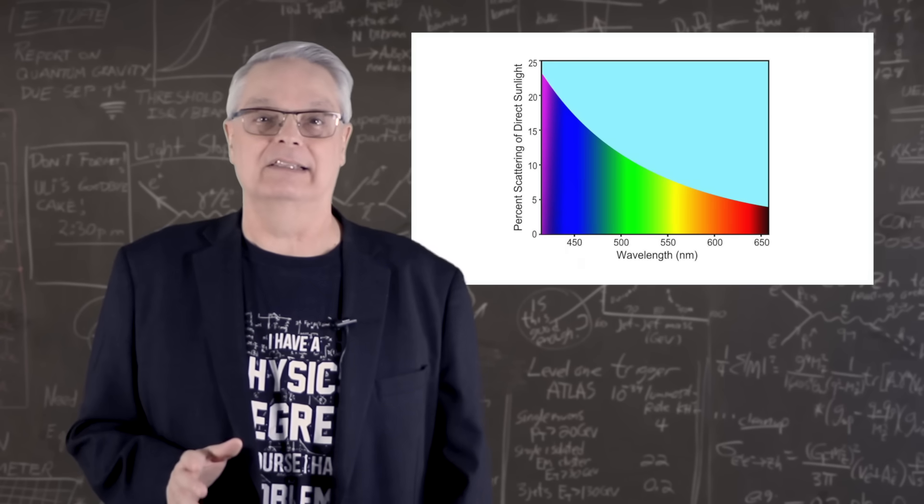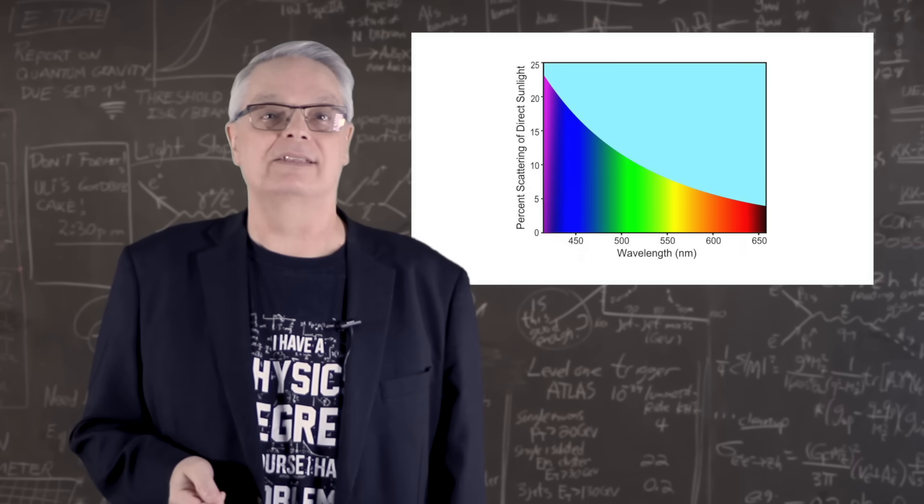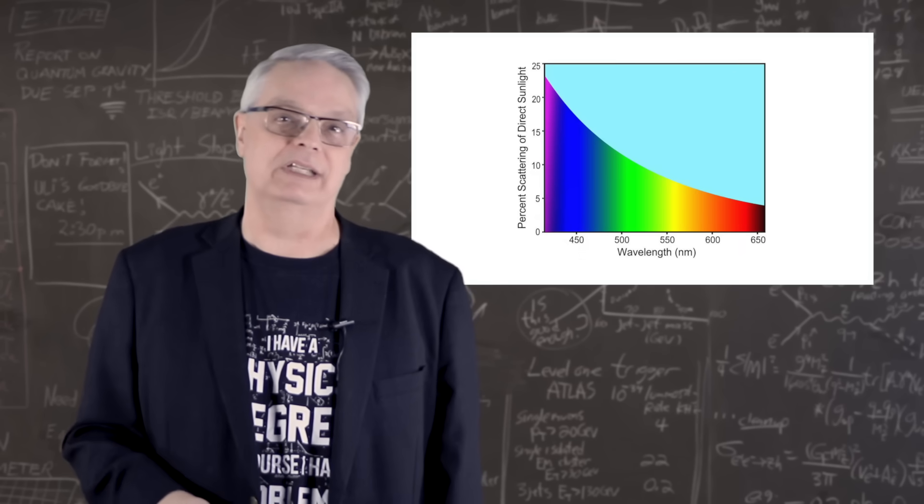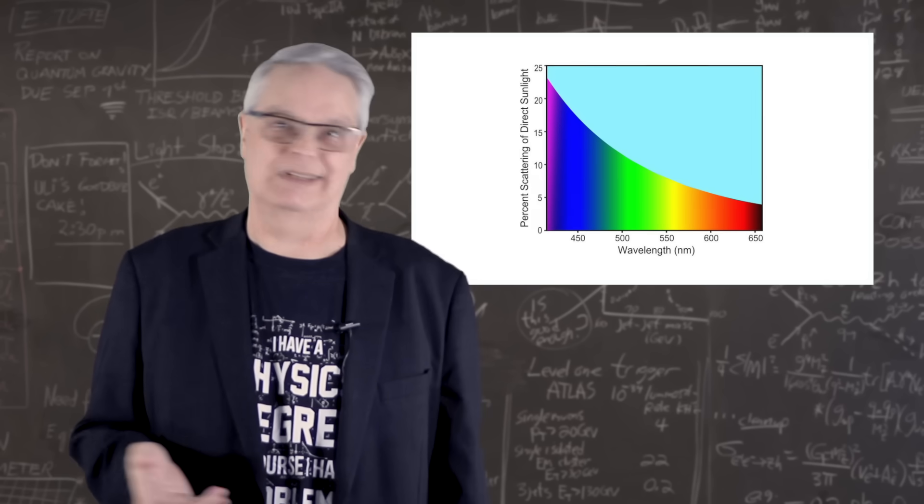They scatter violet light, which is the shortest wavelength light we can see the most. They scatter blue a little bit less, green even a little less, and so on. This picture here shows you kind of how it goes.